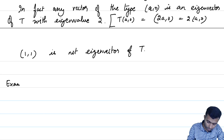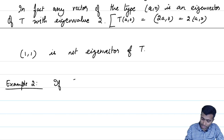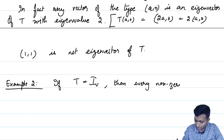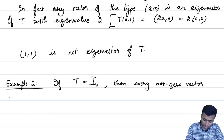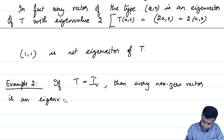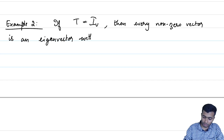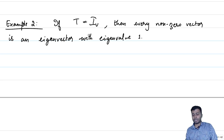Example 2: If T is the identity map, then every non-zero vector is an eigenvector with eigenvalue 1. Notice that in the definition we imposed the condition that eigenvectors must be non-zero. Similarly, with the dilation lambda * I_V, the eigenvalue turns out to be lambda for every non-zero vector.